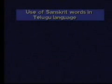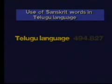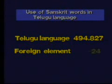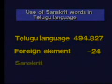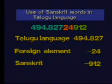Let me explain this with another example: use of Sanskrit words in Telugu language. Here we are talking about Telugu language and the number for Telugu language is 494.827. We know the number for foreign element in Table 4 is 24. Here again we are directed to use Table 6 for the second language. In Table 6, the number for Sanskrit is 912. When you join this number, it becomes the number for use of Sanskrit words in Telugu language.